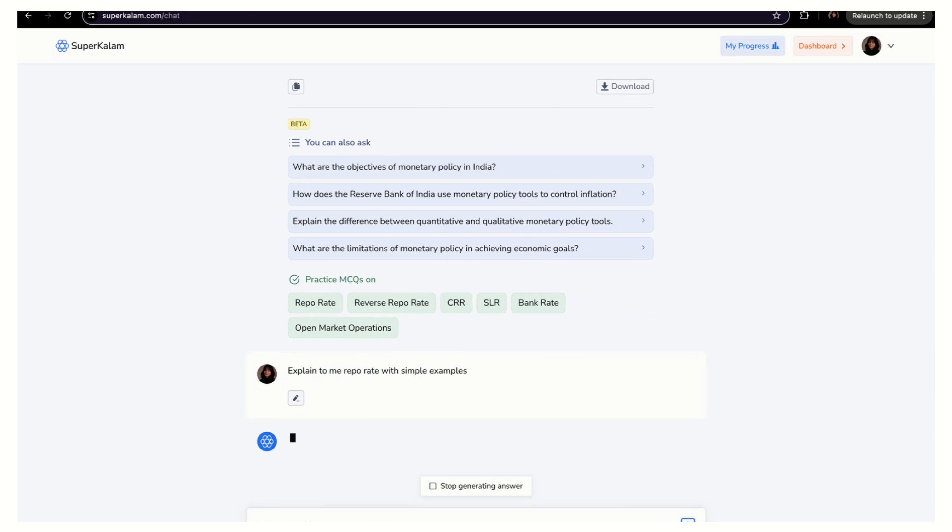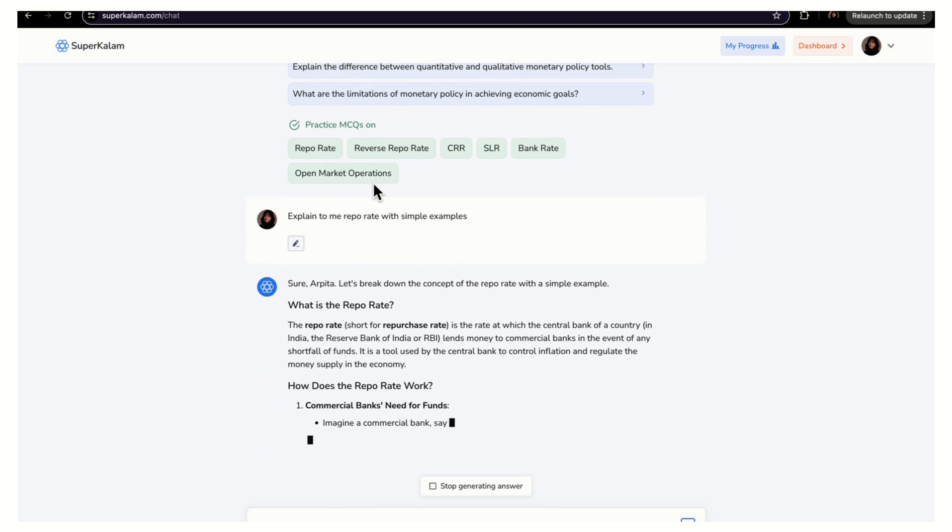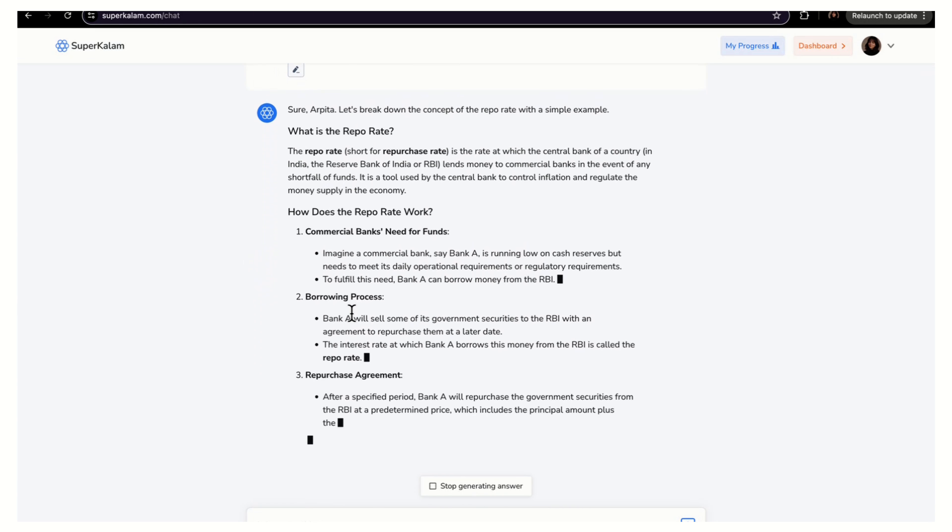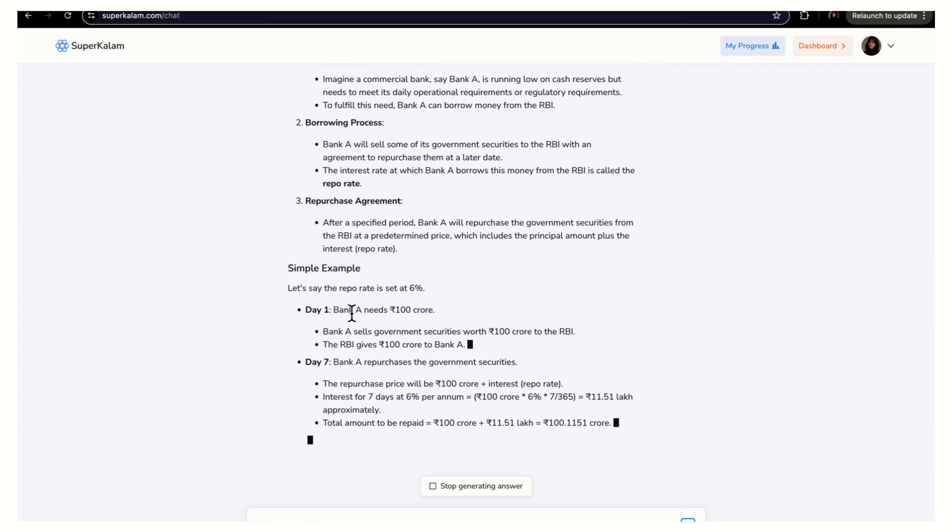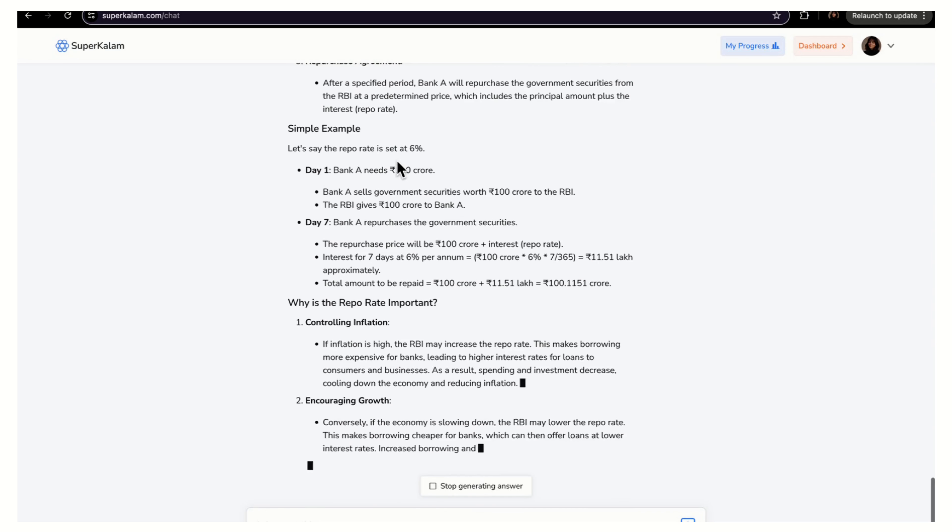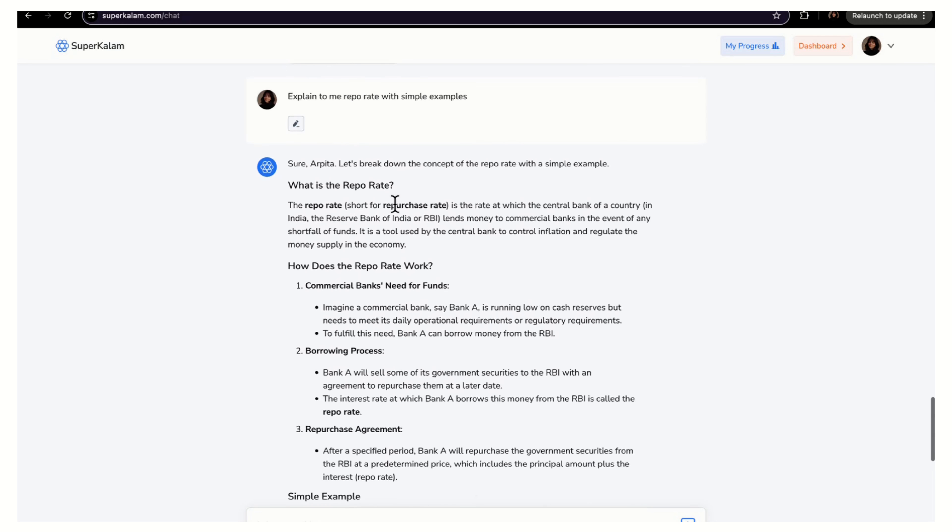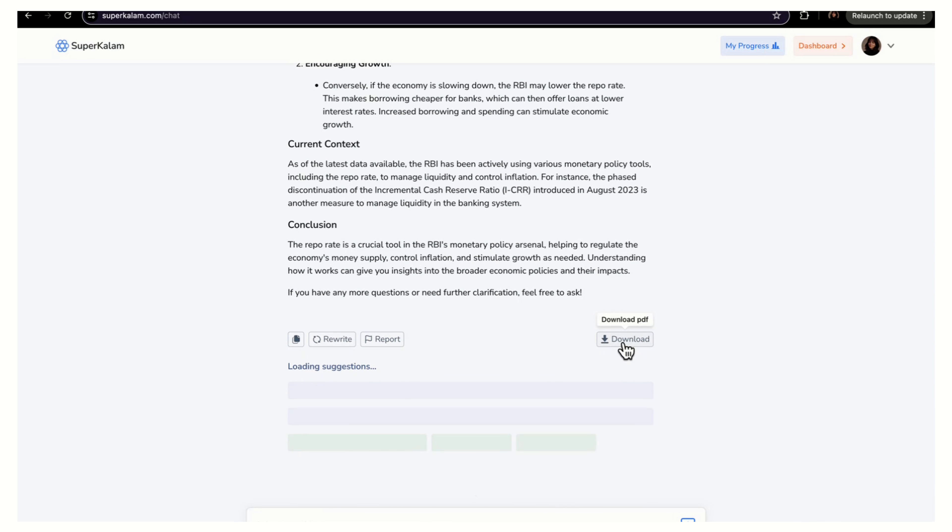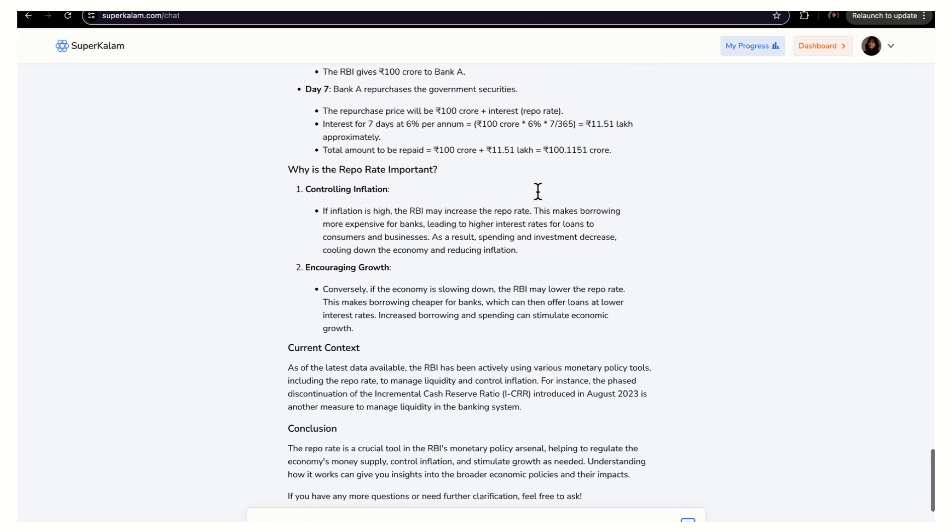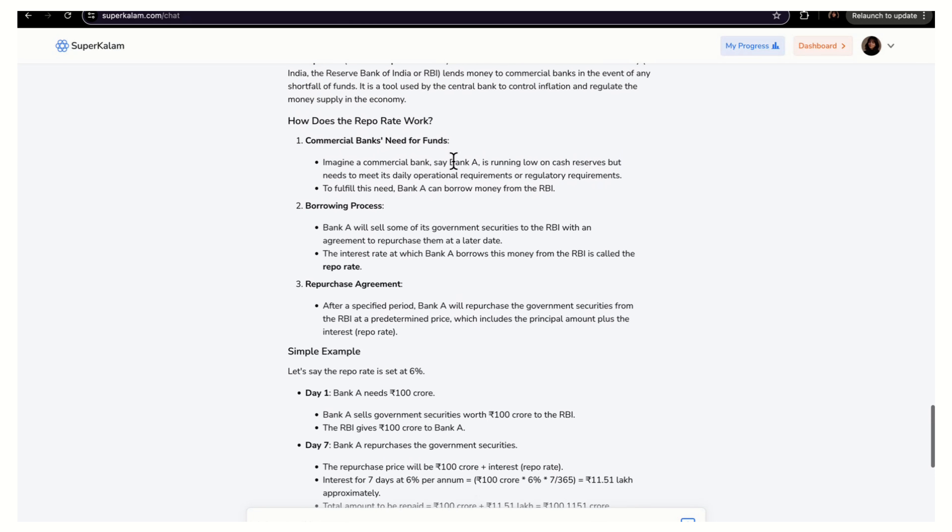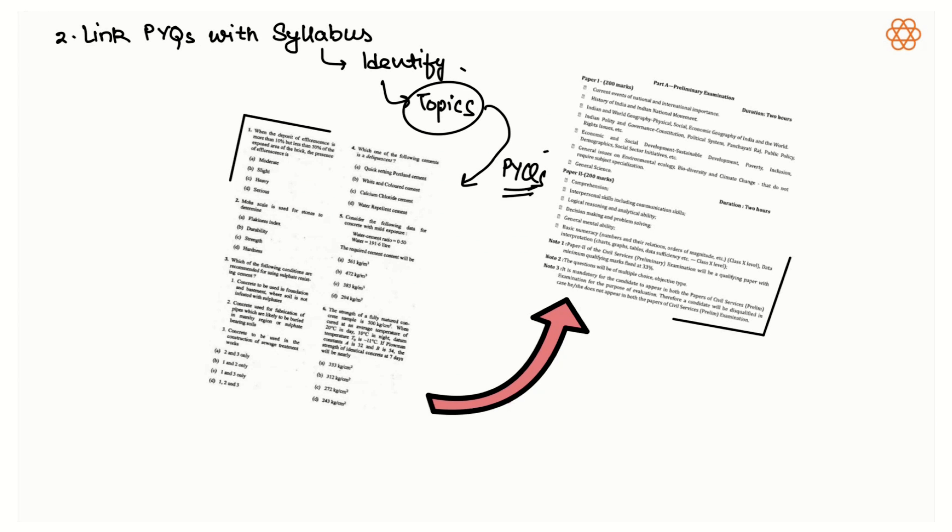See, now I've asked explain repo rate to me. It is suggesting that I can further ask these questions also, but if I have some other questions in my mind I can ask them also. Now see such a simple example Super Kalam is giving me to understand what is repo rate in detail. Now what I'll do, I'll just download the PDF so that I can revise it when and wherever I want to. We are done with our second step - link PYQs with syllabus and practice them.